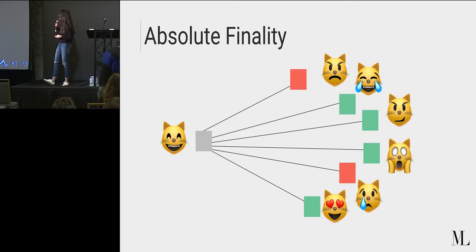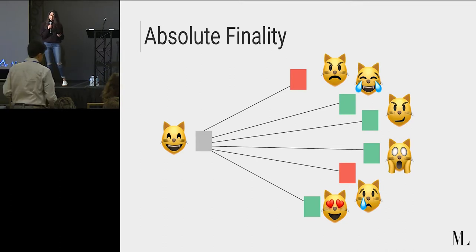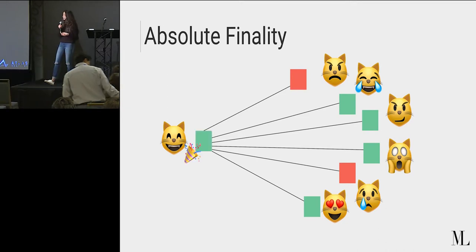So in this case, we can see that every single committee member made their decision on whether this block was valid or not. And given that the threshold of valid was enough for this consensus protocol, that block would be finalized instantly and then added to the blockchain.